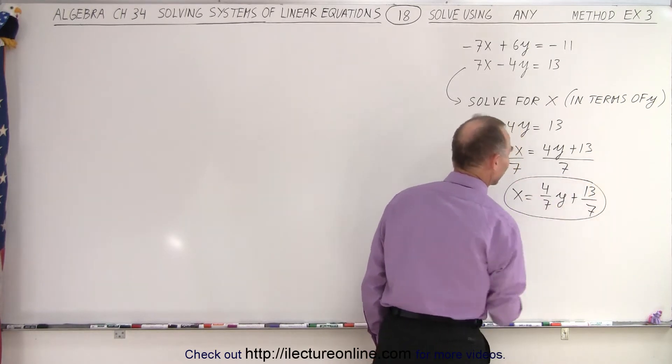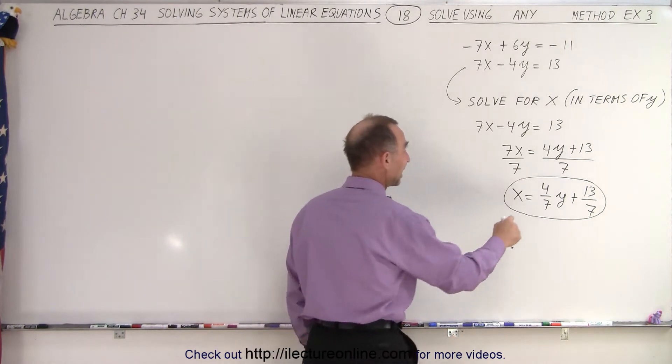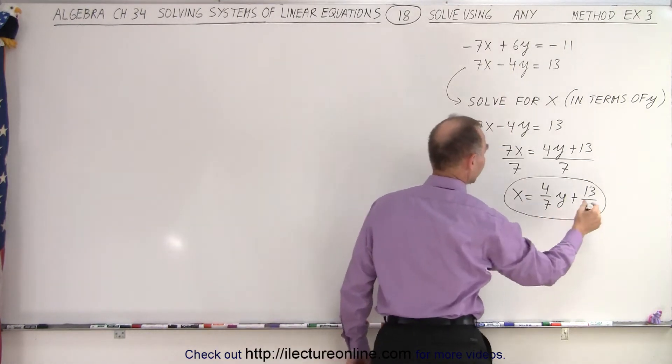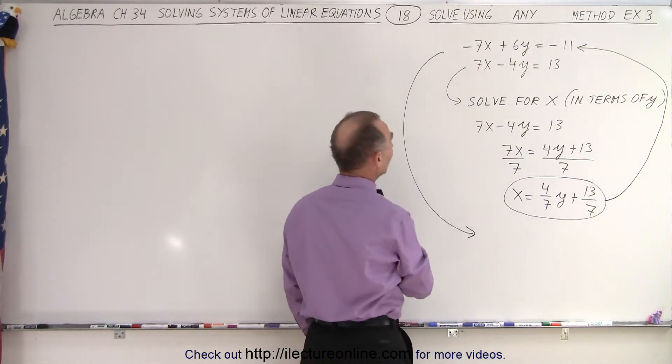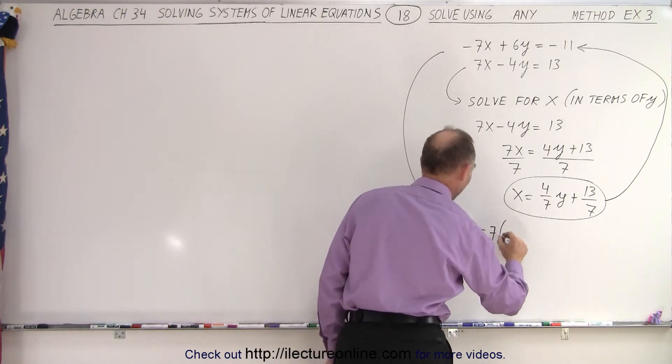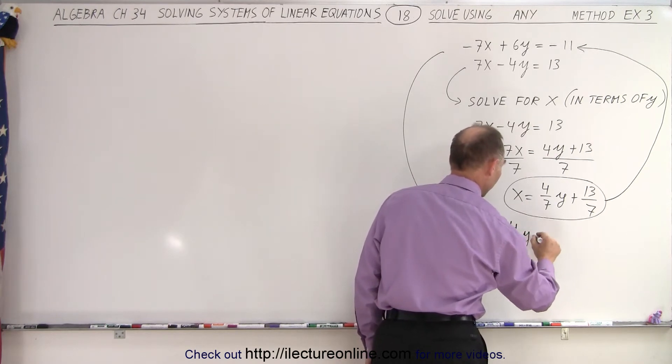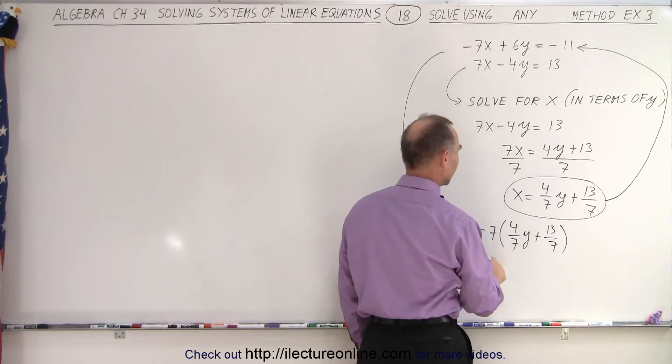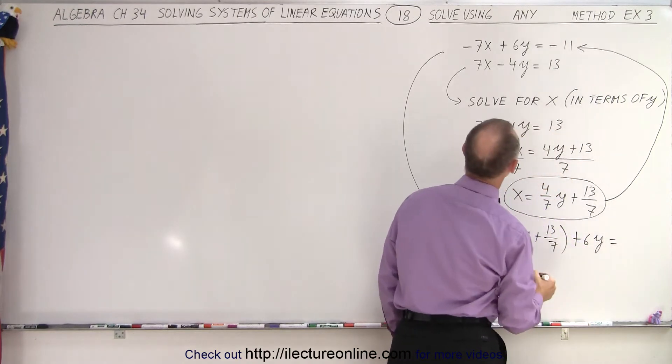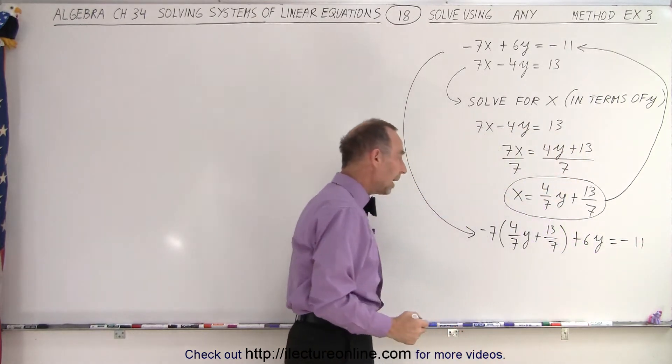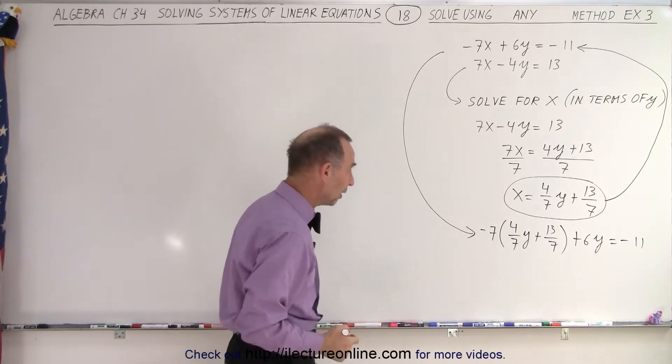Wow, that's already a giveaway that this may not be the easiest way to solve the problem. But hey, what we're going to do now is take this and plug that into the first equation. So let me go around this way, plug it into here, and that means that we now have our first equation written like this. We have minus 7 times, instead of x we're going to write 4 over 7y plus 13 over 7, and then we have plus 6y is equal to minus 11. Okay, so now we have to simplify that. Notice our equation now only has the one variable y in it, so we're going to solve that equation for y.